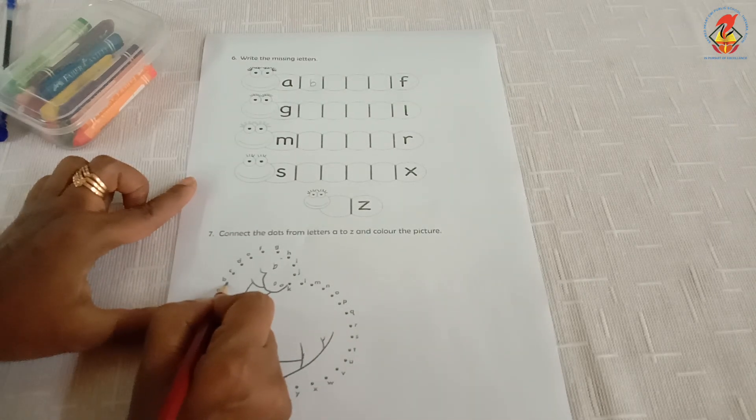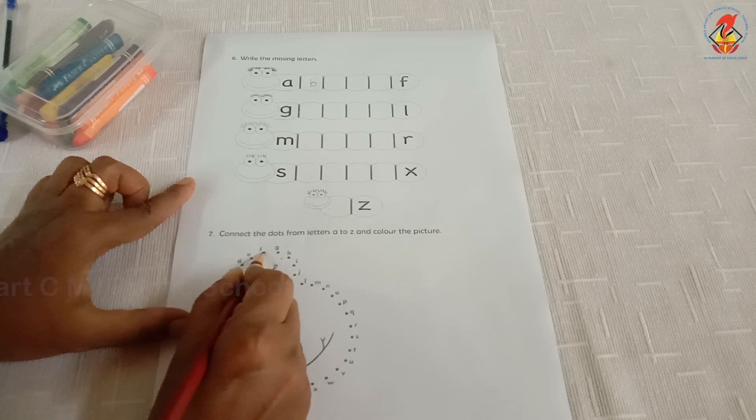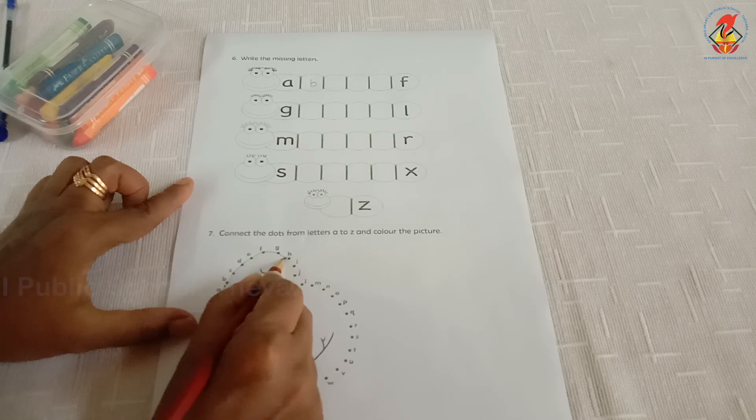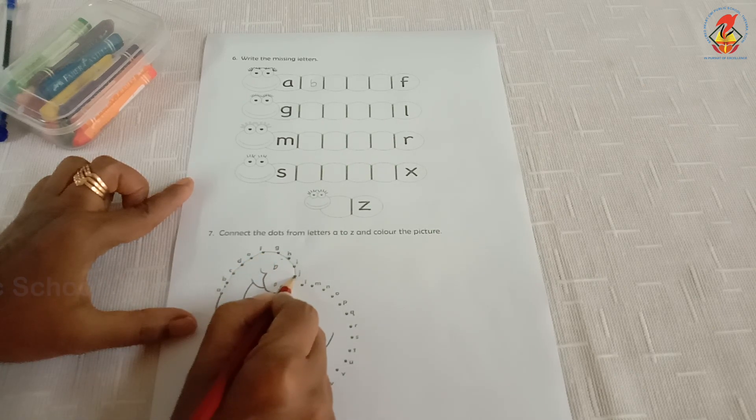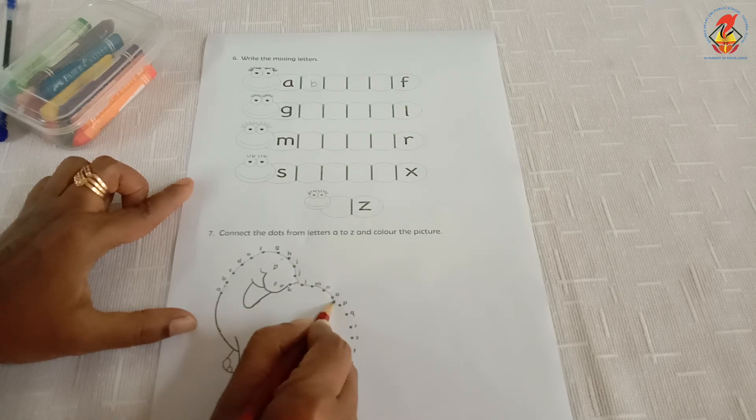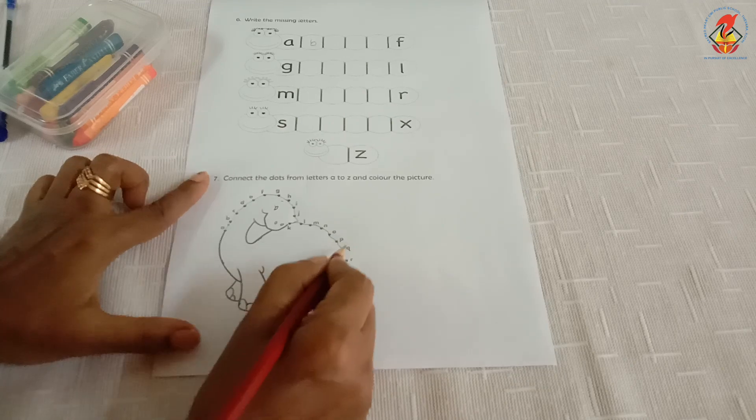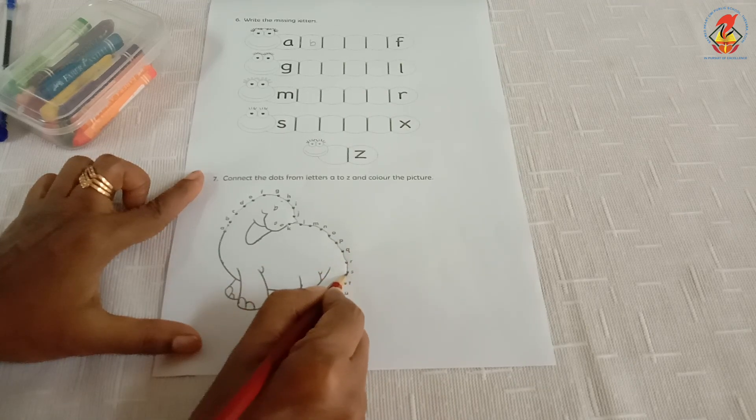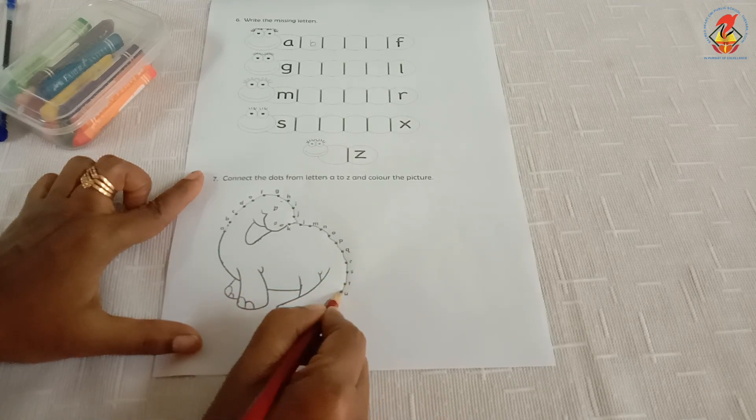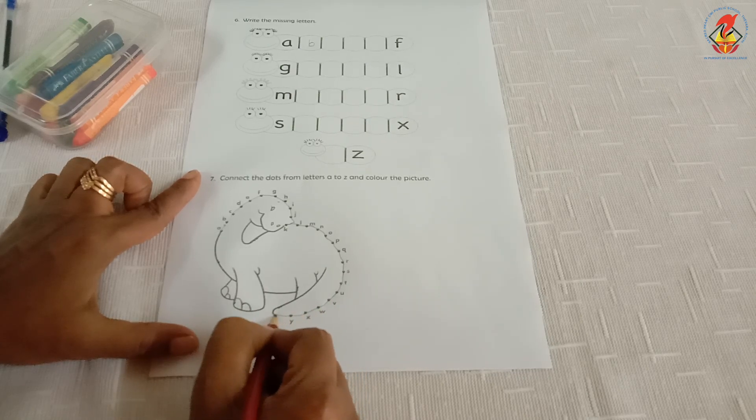Letter A to letter B, C, and do this. E, F, G, H, I, J, K is here, L, M, N, O, P, Q, R, S, T, U, V, W, X, Y, Z.